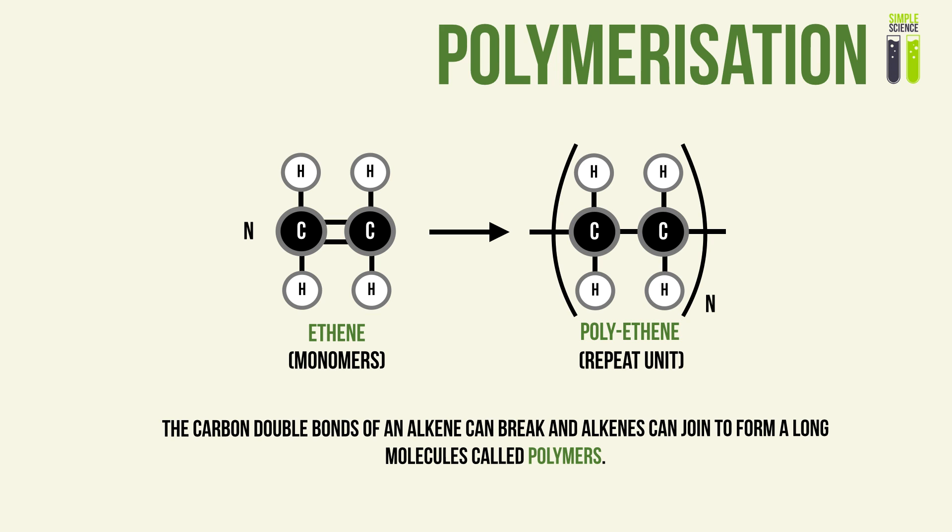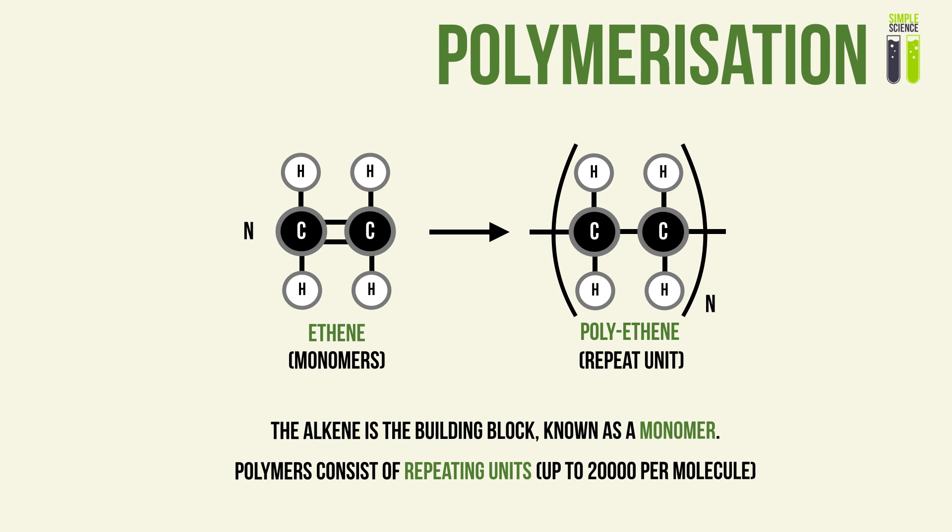The next and final reaction is polymerization. Polymerization is when the carbon double bonds of an alkene break and the alkenes join other alkene molecules to form long molecules called polymers. Essentially, a single substance under certain conditions reacts to form a longer and longer molecule. Each polymer molecule can have up to 20,000 repeating units.